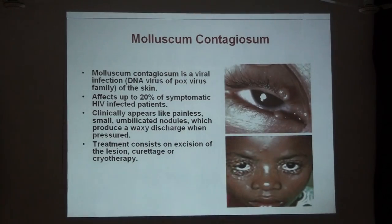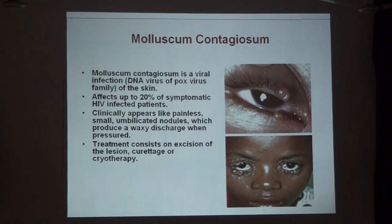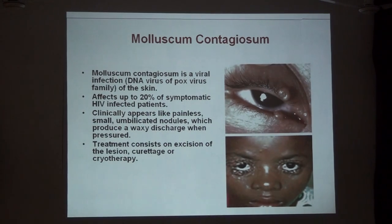Molluscum contagiosum is a harmless condition, usually caused by a DNA virus of the Poxviridae family. It can affect up to 20% of symptomatic HIV infected people. They present as painless, umbilicated small nodules which produce a waxy discharge when compressed. Treatment can be local excision or curettage and cryotherapy of the lesions.